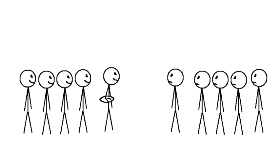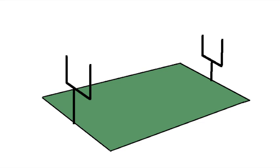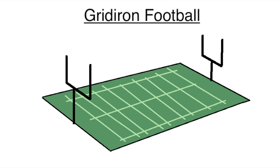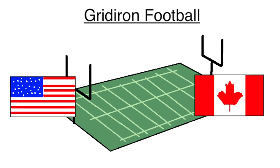This allowed one team to keep the ball for way too long, though, so after a few really boring games, they decided that if you didn't gain five yards or lose ten in four plays, the other team gets the ball. This made it really useful to mark the field with a grid, so this version became known as Gridiron Football, further subdivided into American Football and Canadian Football.